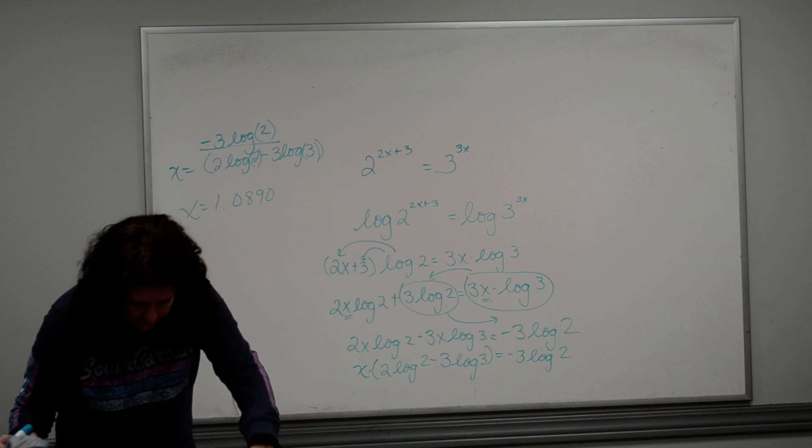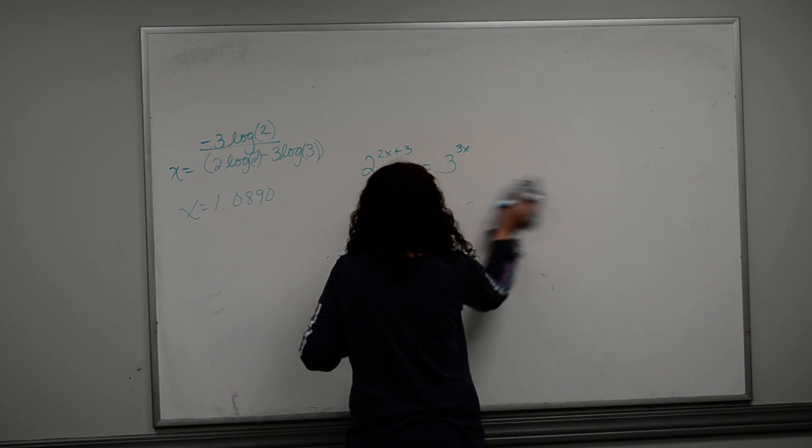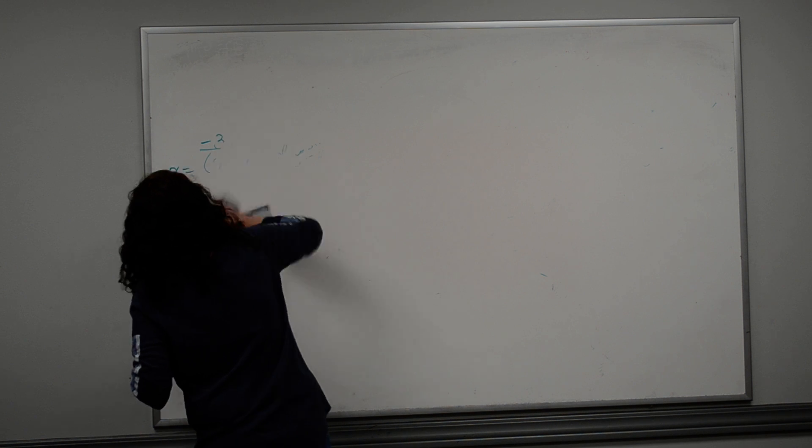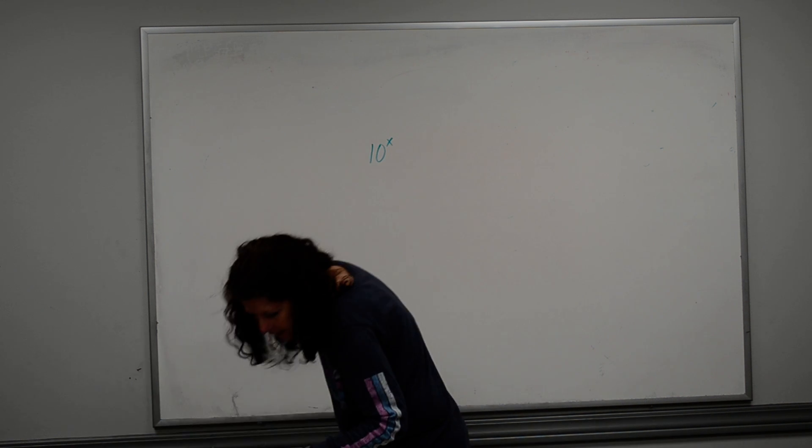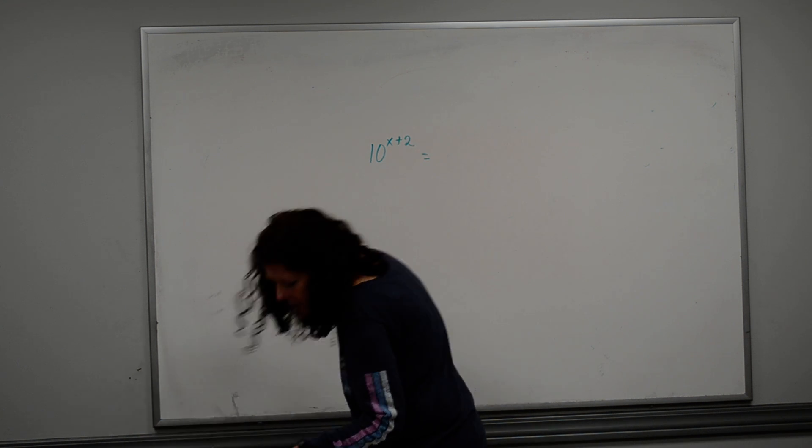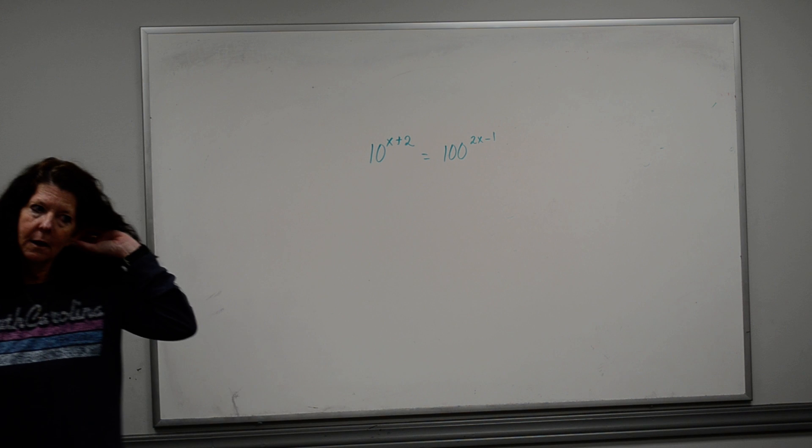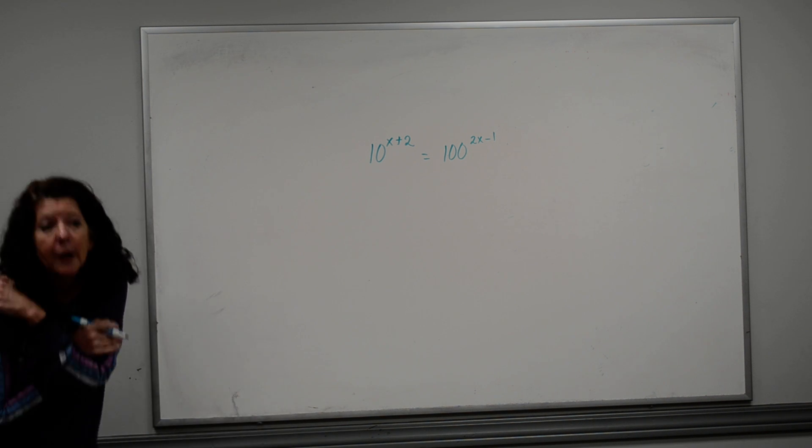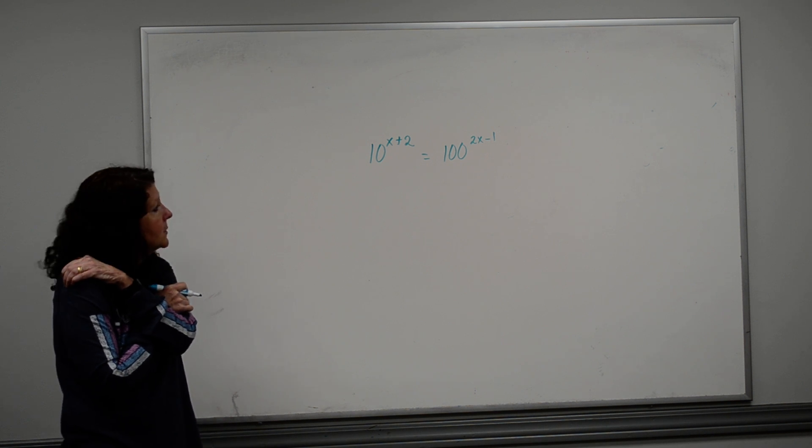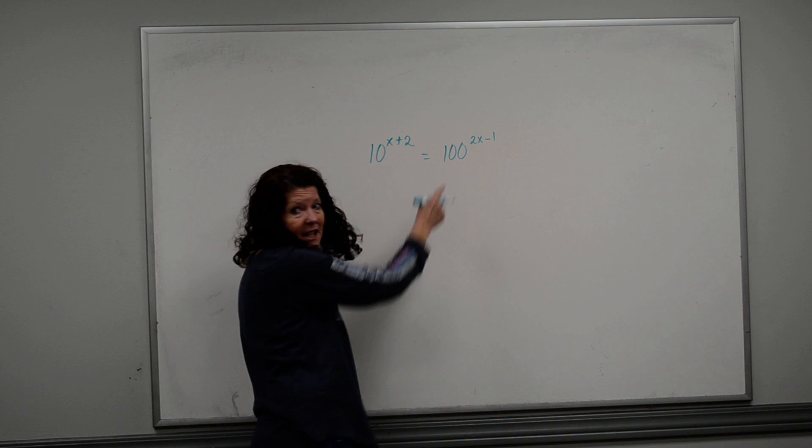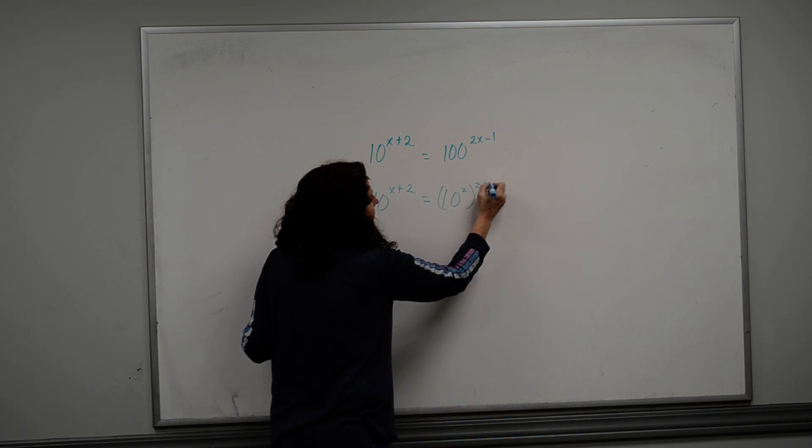All right, 10 raised to the x plus 2 power is equal to 100 raised to the 2x minus 1 power. Now, before you start this, you can do this the long way, the way that we just did, or you can do it the easy way, because look at those bases. Is there any way that I can make those have the same base? 100 is 10 squared. That's 10 squared, isn't it? So then I have 10 raised to the x plus 2 is equal to 10 squared raised to the 2x minus 1.